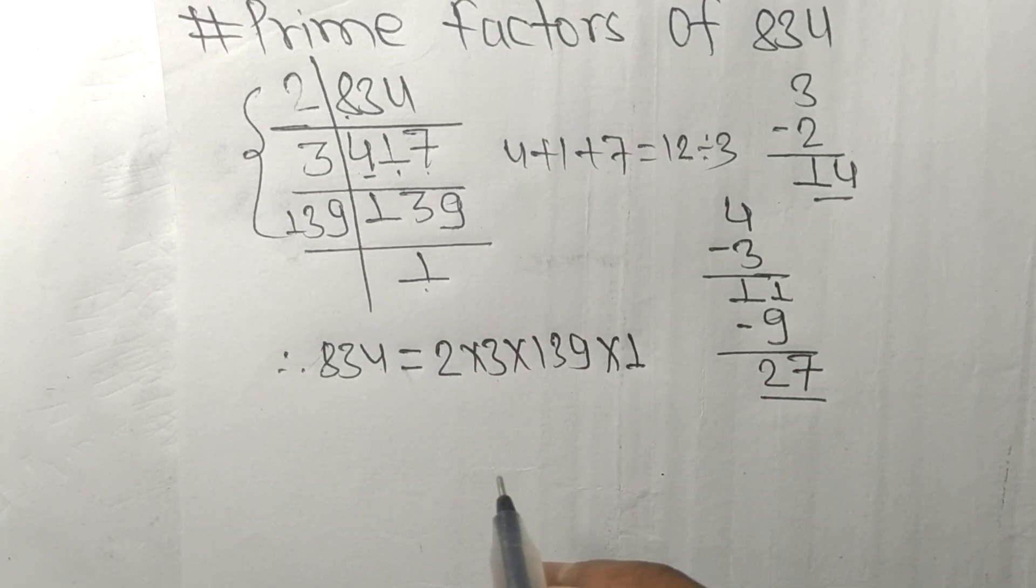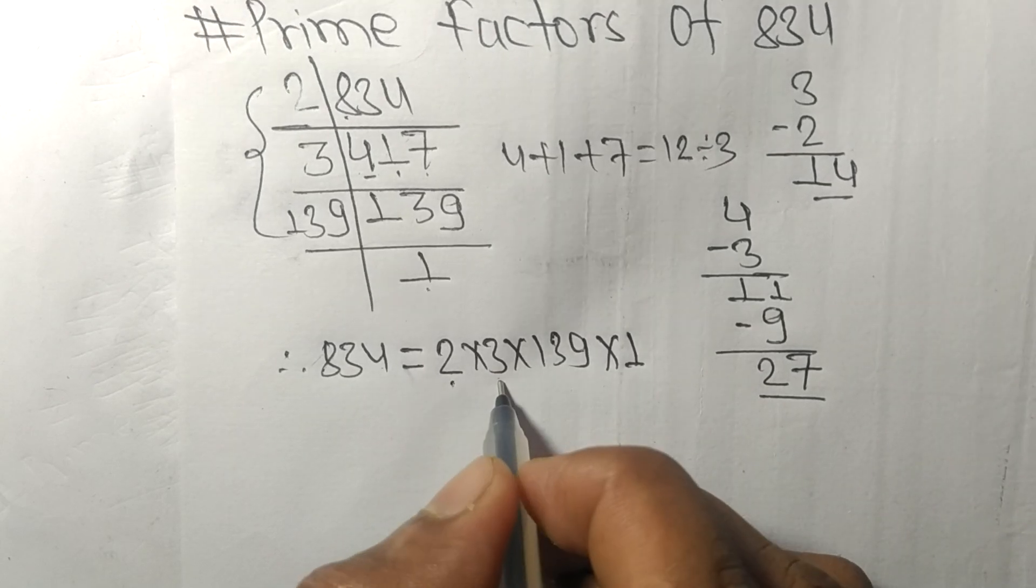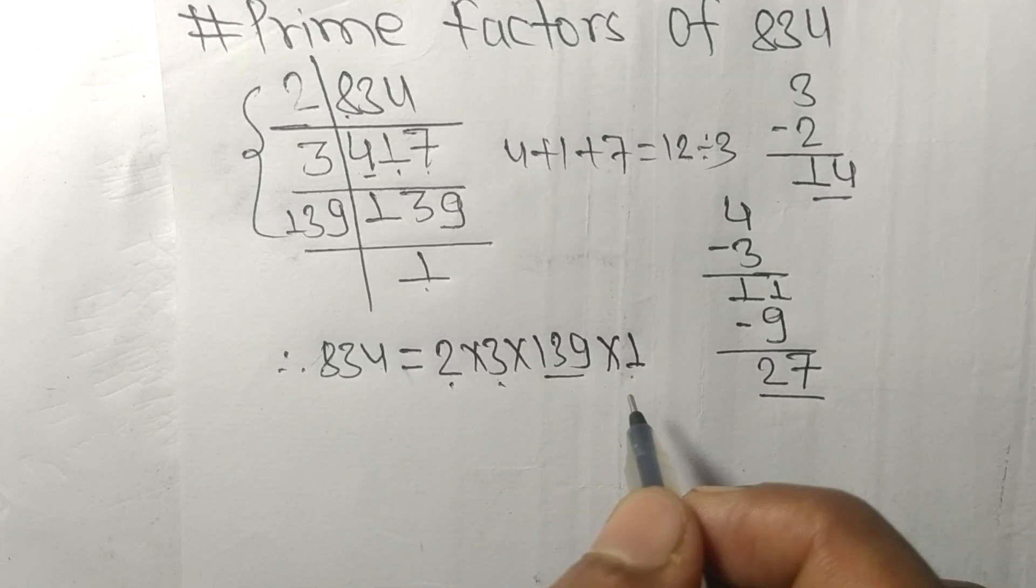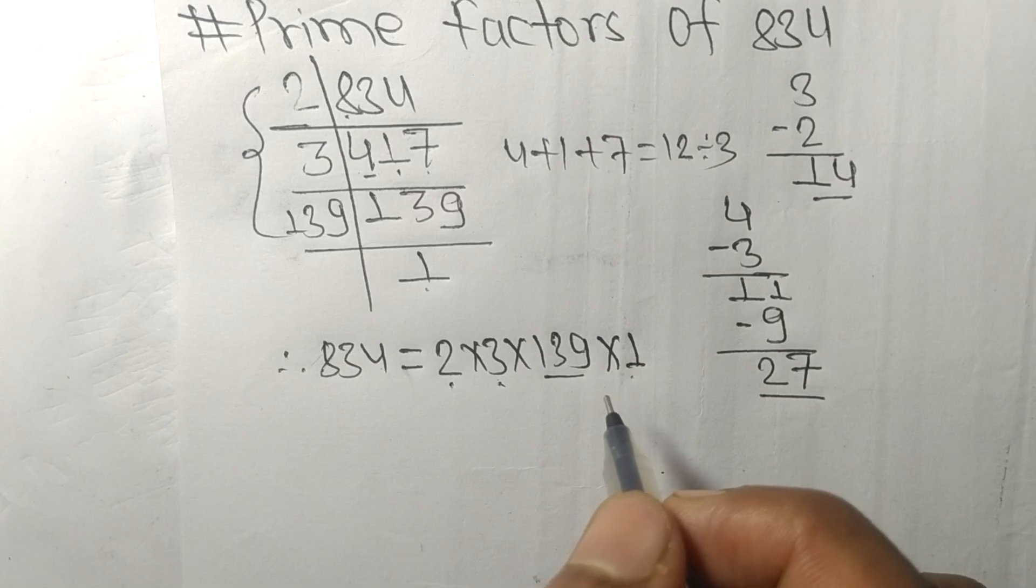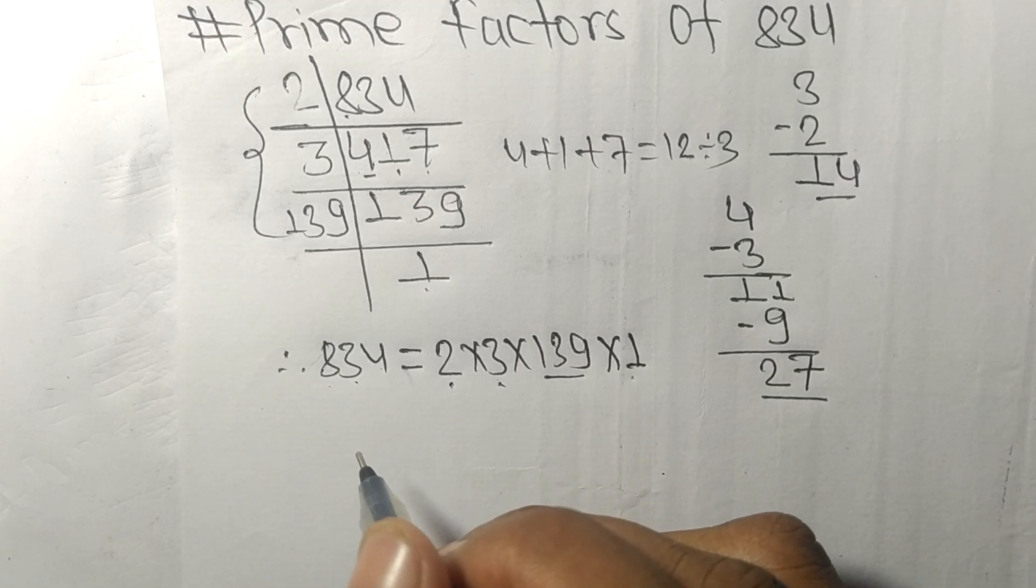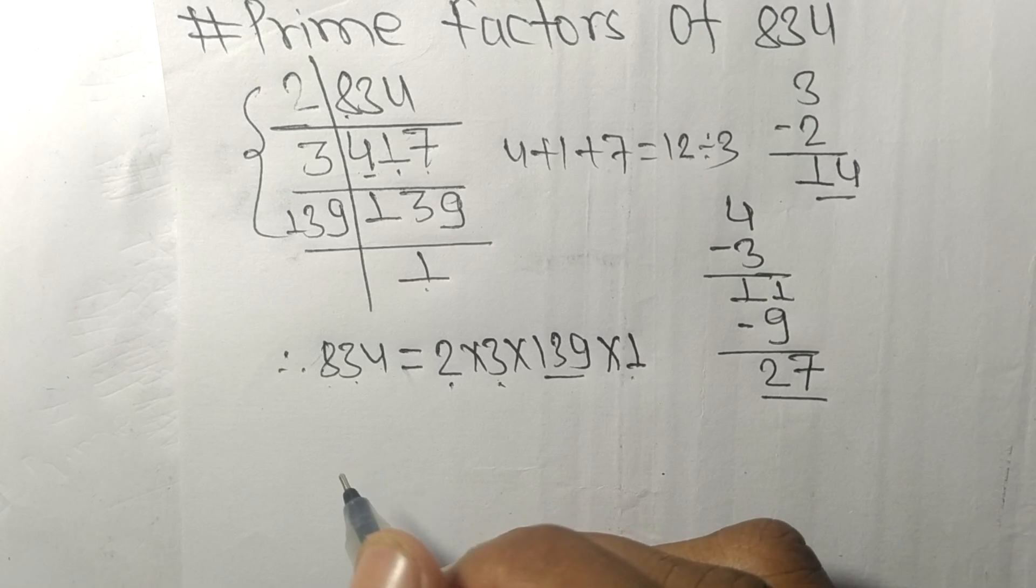So 2, 3, and 139 are the prime factors of 834. So this much for today, and thanks for watching.